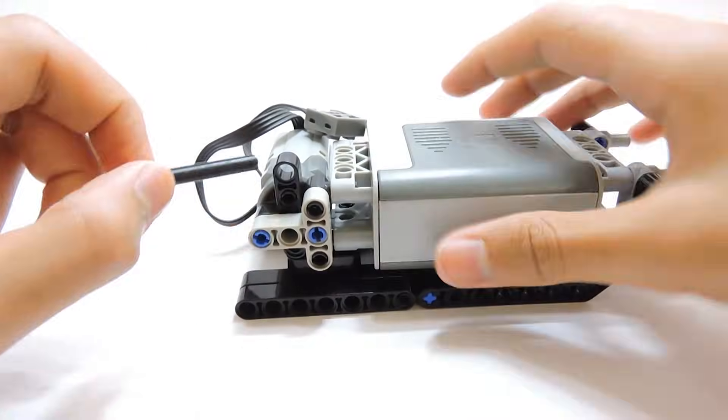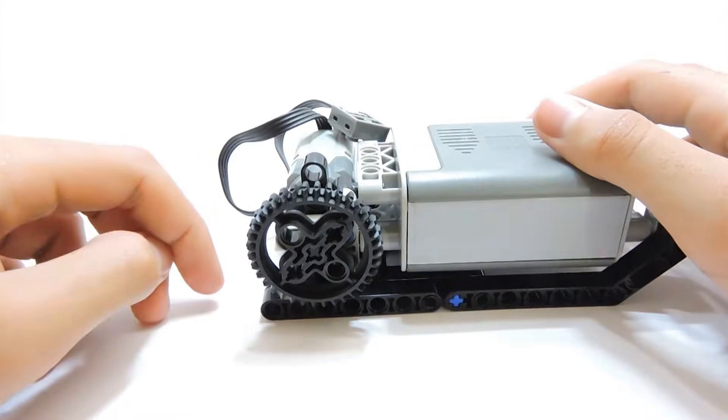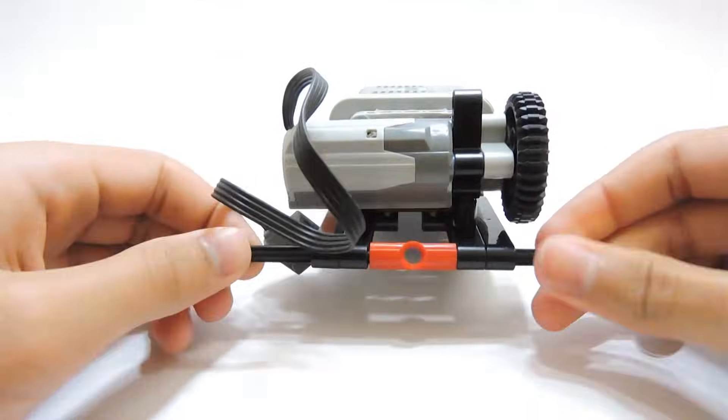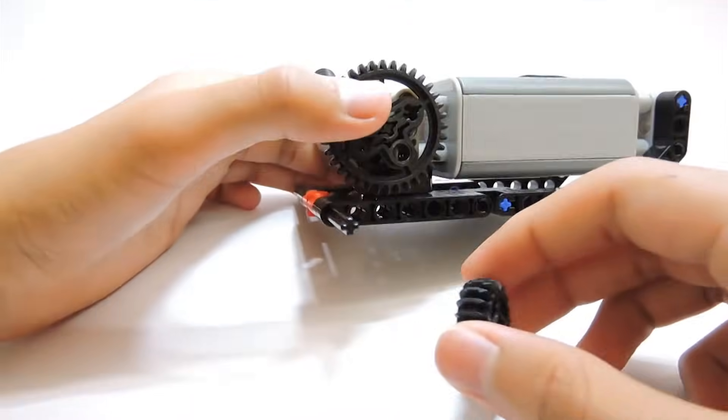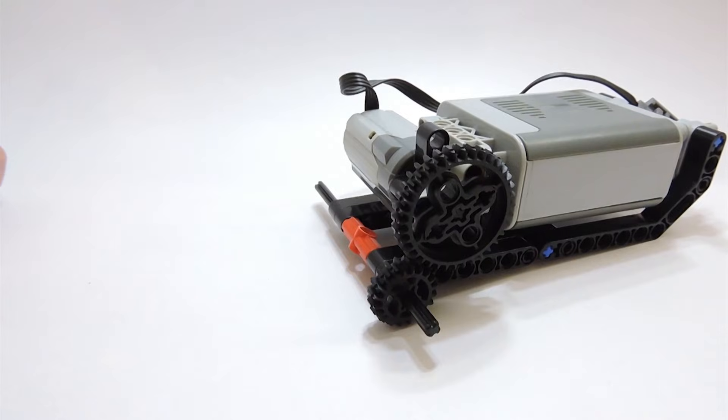Now, take a four sized axle and a gear and attach it to the motor like this. Next, taking two six sized axles and one axle connector, join them like this. Take a small gear and connect it to the bigger one on one side such that the motor can now rotate this axle.